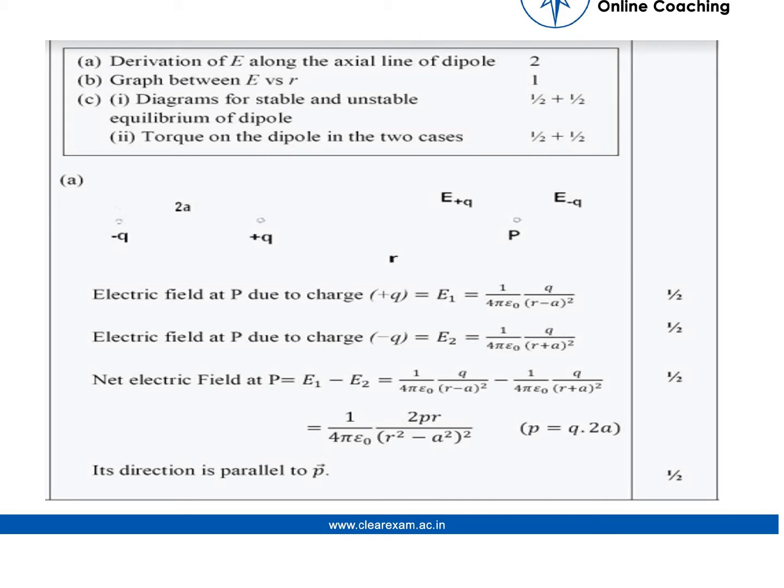Now coming to the solution. Electric field at point P due to charge plus Q is E1 equals 1 over 4 pi epsilon naught Q over R minus A squared. Electric field at point P due to charge minus Q is E2 equals 1 over 4 pi epsilon naught Q over R plus A whole squared.